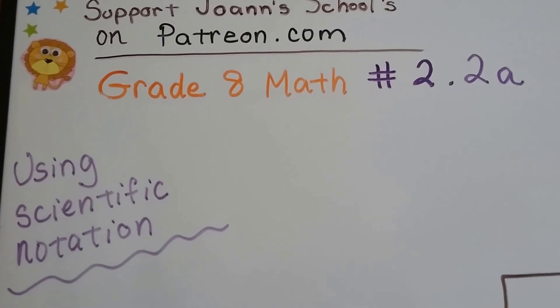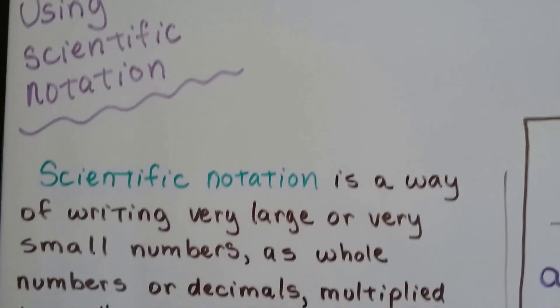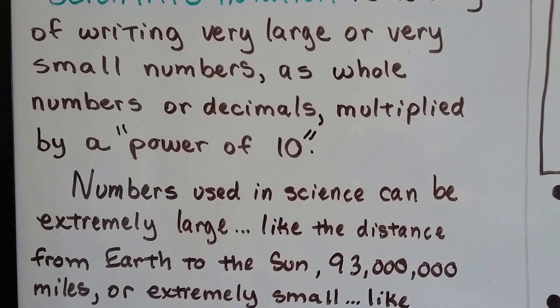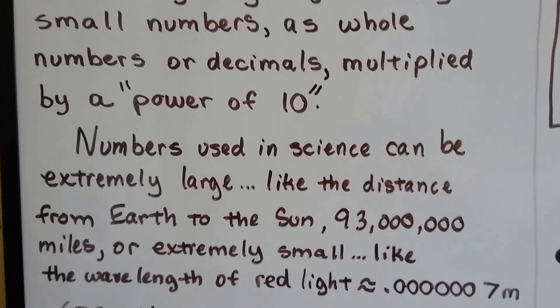Grade 8 math, number 2.2a, using scientific notation. Scientific notation is a way of writing very large or very small numbers as whole numbers or decimals. They're multiplied by a power of 10.